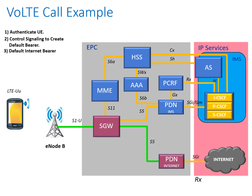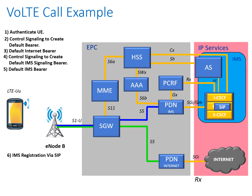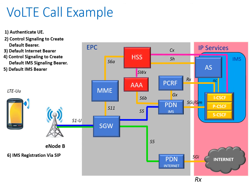Once the signaling has been established and the bearer has been set up, we can move on to the next stage of connectivity. The MME now sets up the signaling required to establish a second bearer into the IMS core. We can then register our device within the IMS core using a SIP registration request. SIP — the Session Initiation Protocol — is a very important protocol; it's really the glue which holds the IMS core together, used not only for registration but also for placing calls within the network.